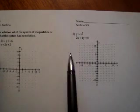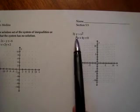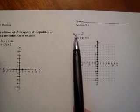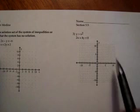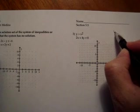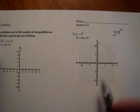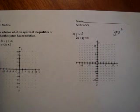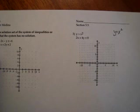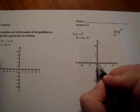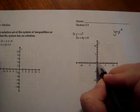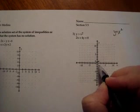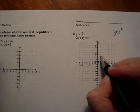For number three, the first inequality is y > x². Your first job is to graph the boundary graph. Replace the inequality with an equal sign: y = x². That's a parabola. I'll plot a few points: (0,0), (1,1), (-1,1), (2,4), (-2,4).